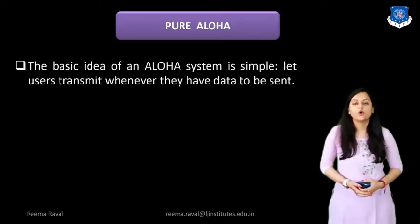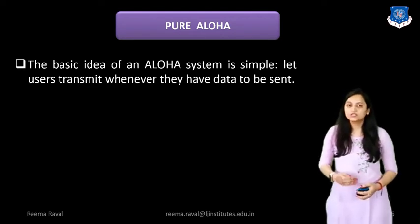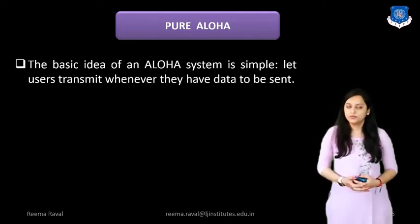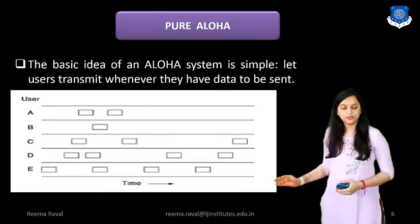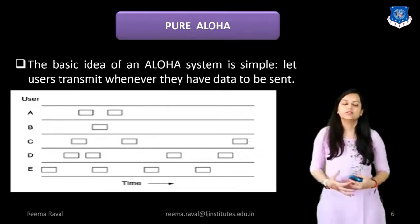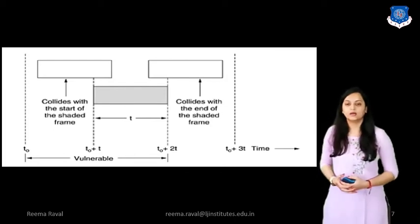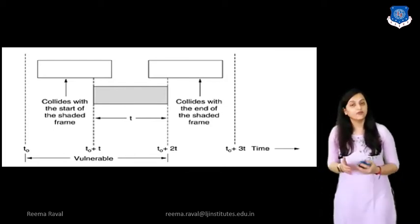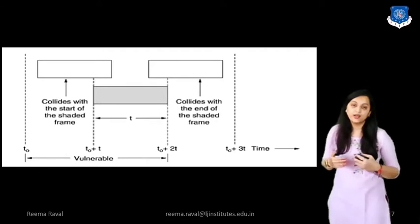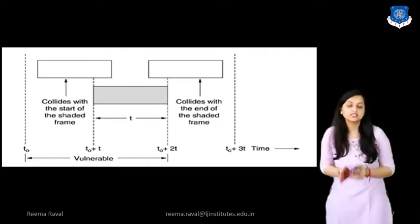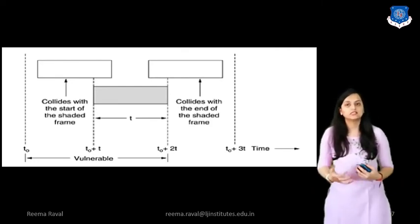The basic idea of an ALOHA system is simple: let the users transmit whenever they have data to be sent. As you can see in this diagram, there are users A, B, C, D, E who, with respect to time, are transmitting particular frames whenever they have data frames to be sent. Here we are considering the case where two frames are colliding. In Pure ALOHA, this can occur when frames are transmitted at the same time interval, because data is sent as soon as it arrives.